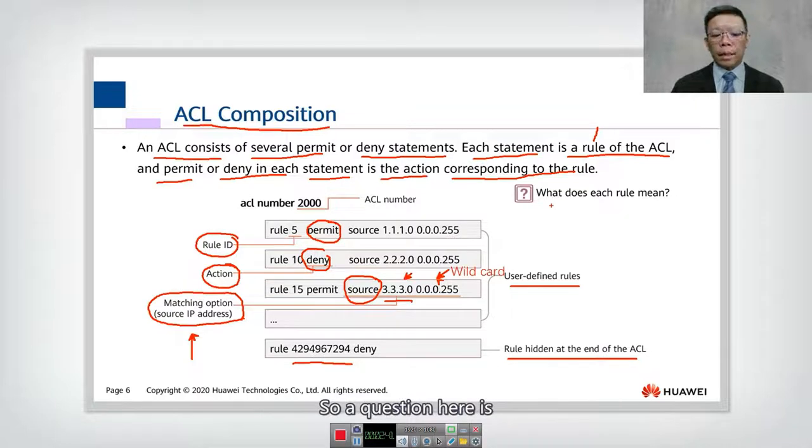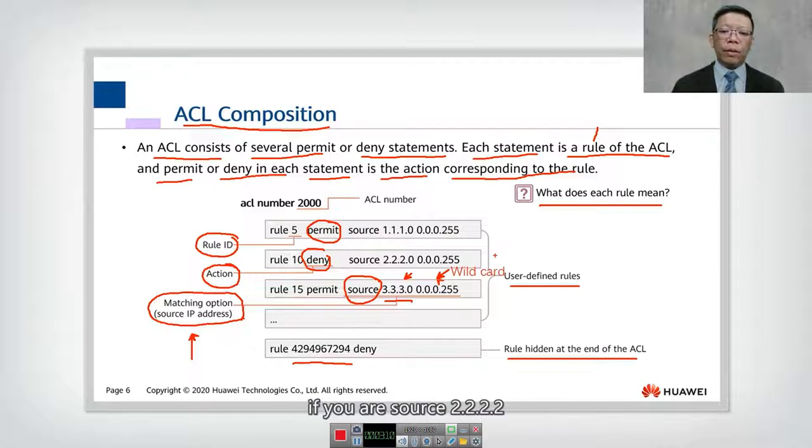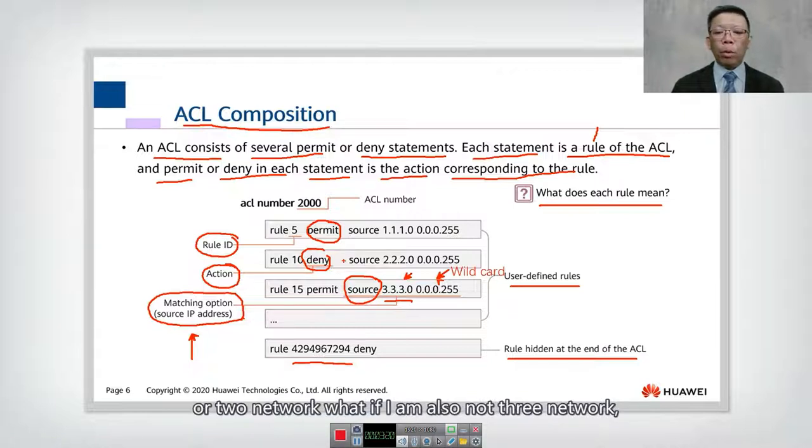So a question here is, what does each rule mean? Each of these rules have its own meaning. So for example, for rule number 5, I do permit if you are a source of 1.1.1.0 subnet. But if you are a source of 2.2.2.0, it doesn't actually match number 1. So you go to match number 2. So in this case, the rules number 2 here specify that if you are source 2.2.2.2, then you get denied.